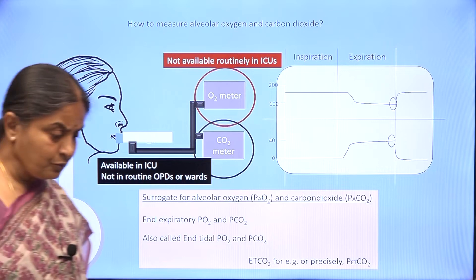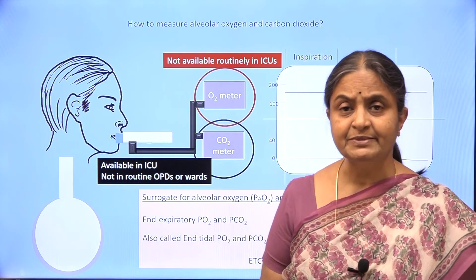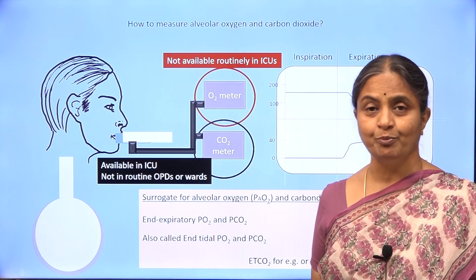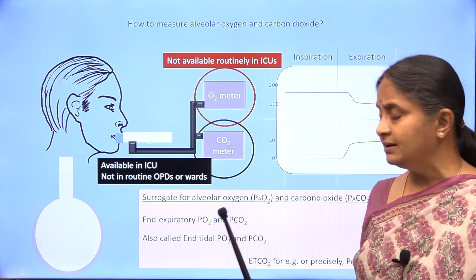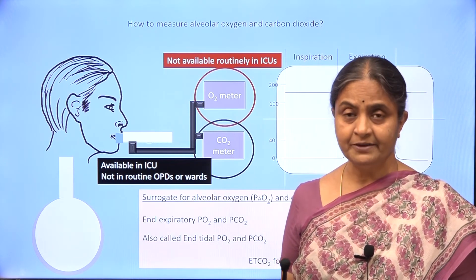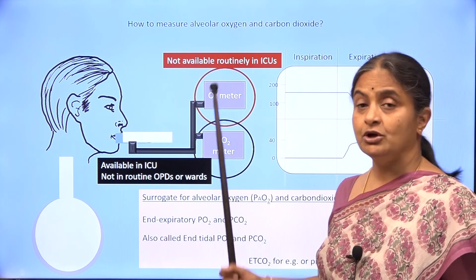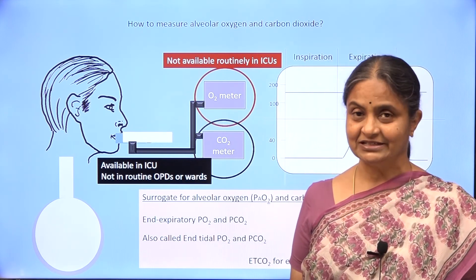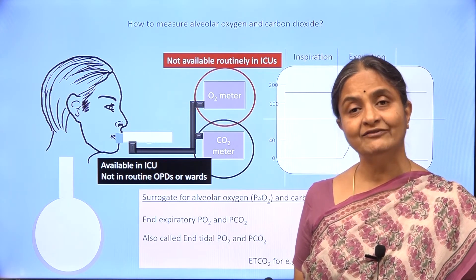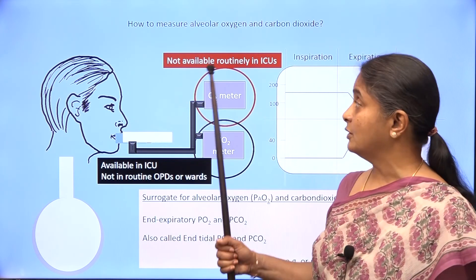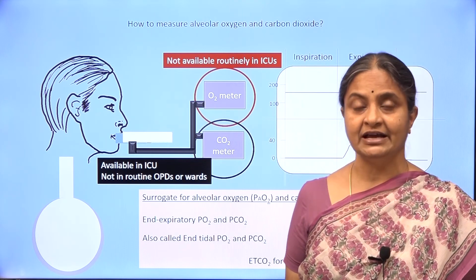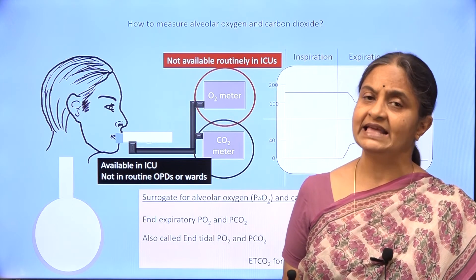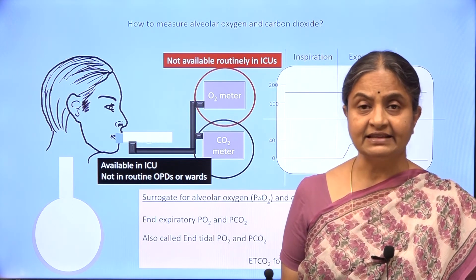What would be surprising is that though this method is so simple, this instrument is not available in the wards or the OPD. A capnometer is available in the ICUs only, and in fact an oxygen meter is not even available in the intensive care units. I really do not understand why. If you want to estimate alveolar oxygen concentration while an oxygen meter is not available in the ICU, it is done with the use of what is called the alveolar gas equation — we will see that in the next lecture.